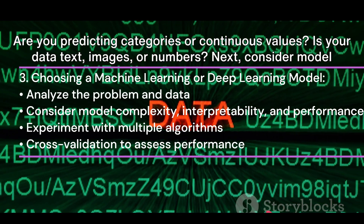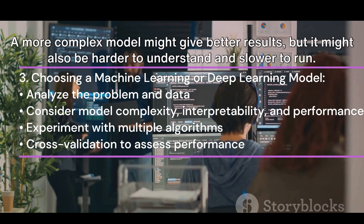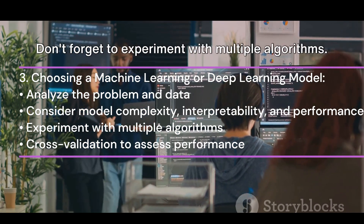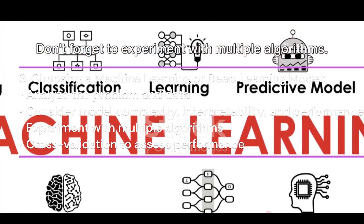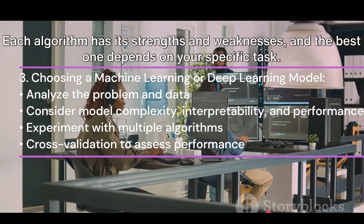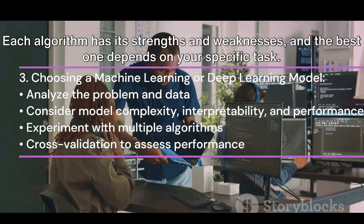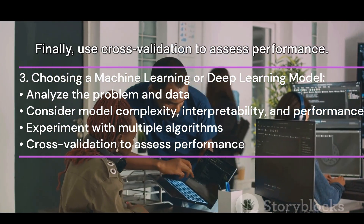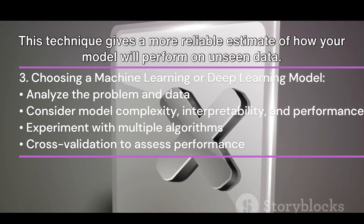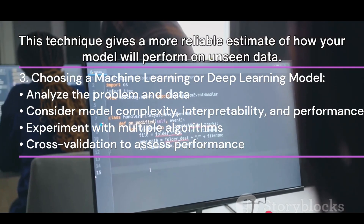Next, consider model complexity, interpretability, and performance. A more complex model might give better results, but it might also be harder to understand and slower to run. Don't forget to experiment with multiple algorithms — there's no one-size-fits-all in machine learning or deep learning. Each algorithm has its strengths and weaknesses, and the best one depends on your specific task. Finally, use cross-validation to assess performance, as this technique gives a more reliable estimate of how your model will perform on unseen data.